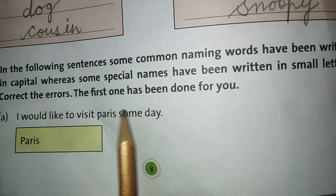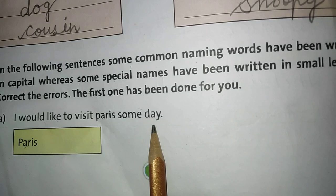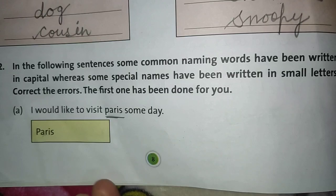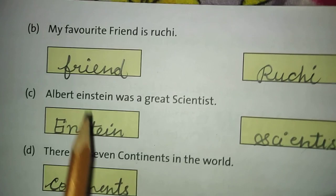The first one is done for you: 'I would like to visit Paris someday.' Now here, Paris is the name of a place, and its P has been given as small. So we correct it — Paris should have a big, capital P.